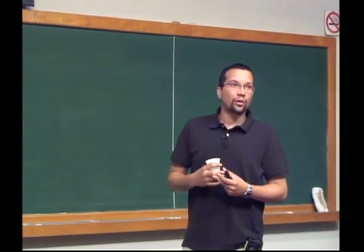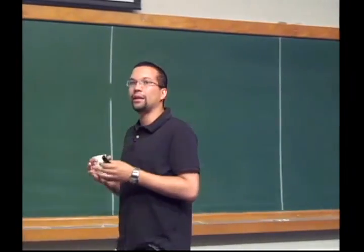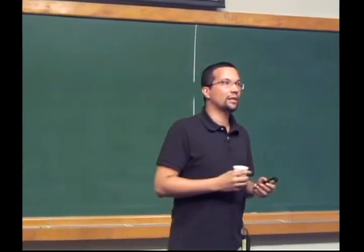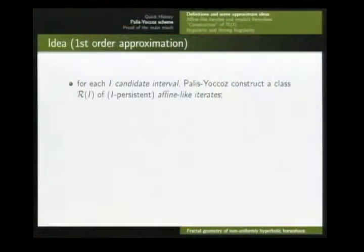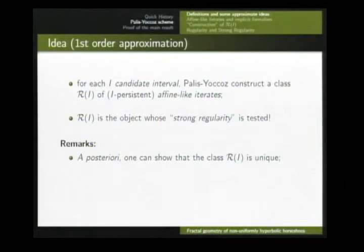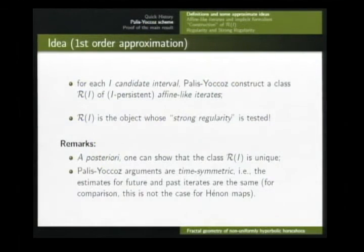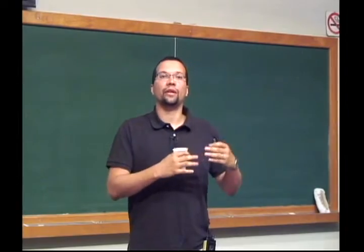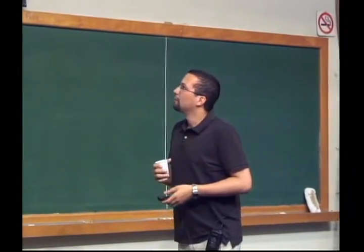The idea to zeroth order is the usual parameter exclusion scheme. They start with I-zero, subdivide; assuming I-K is defined, they subdivide this interval into a certain quantity of sub-intervals of approximately equal size. Then they apply an exam — called strong regularity — to each sub-interval. They discard bad intervals that fail the exam, keep the approved ones, and keep going, hoping that there are parameters surviving in the end. More seriously: for each candidate interval, they construct a class of iterates called affine-like iterates, and the exam is applied to the interval through this class. One nice thing is that this argument is time-symmetric.